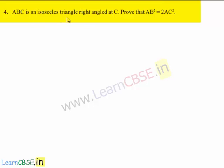ABC is an isosceles triangle with a right angle at C. Prove that AB square is equal to 2AC square.